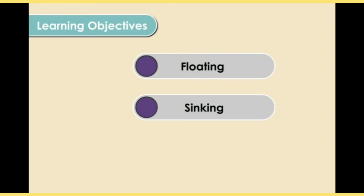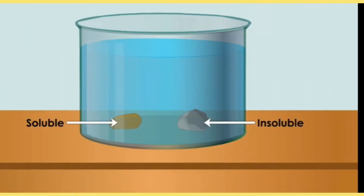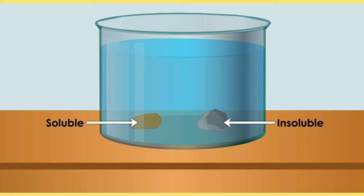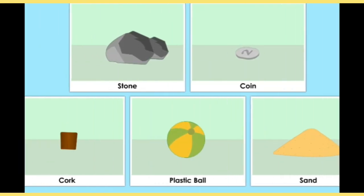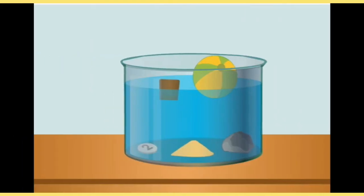Now one more property we will learn about: floating and sinking. Some objects float on water and some objects sink in water. We have four things here: stone, coin, cork, and sand. If we add these things in water, we can observe which ones float and which ones sink.